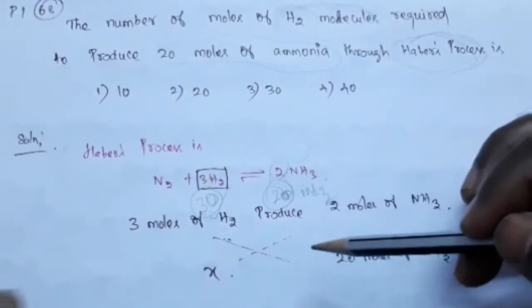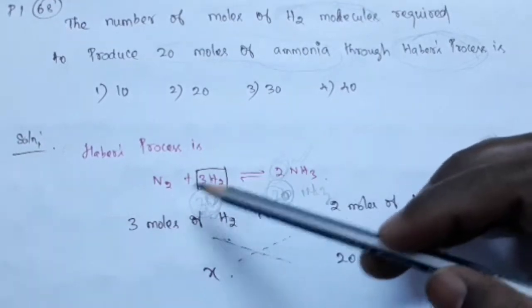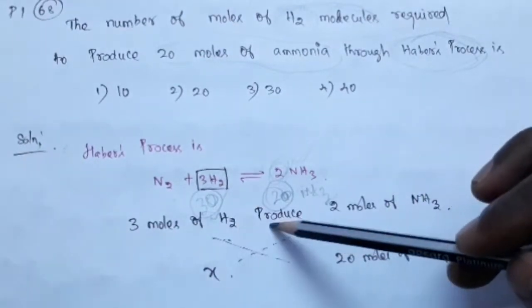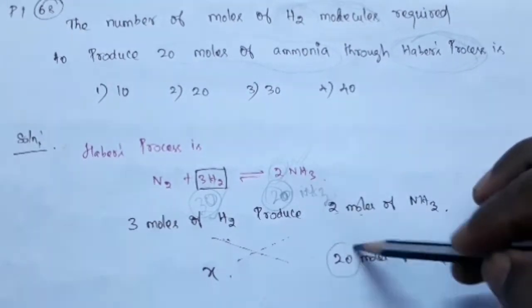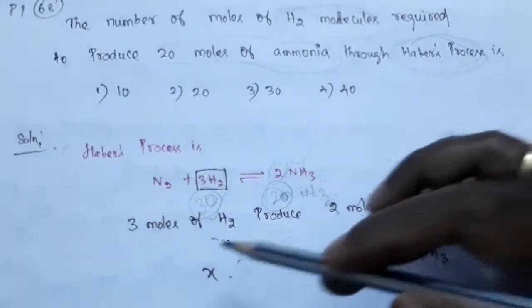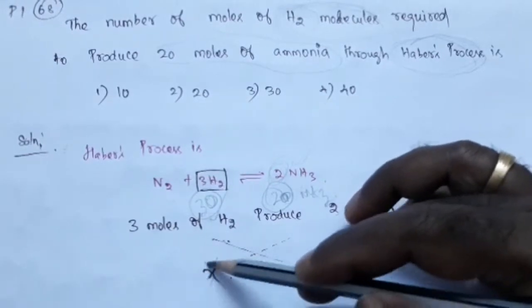If you want to go to the correct procedure, see here. 3 moles of H2 produce 2 moles of ammonia. We need 20 moles of ammonia. How many moles? X. How many moles of H2?